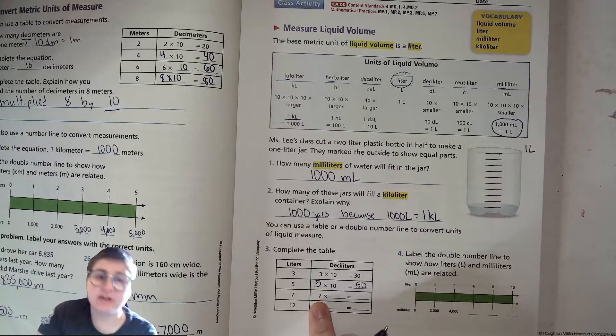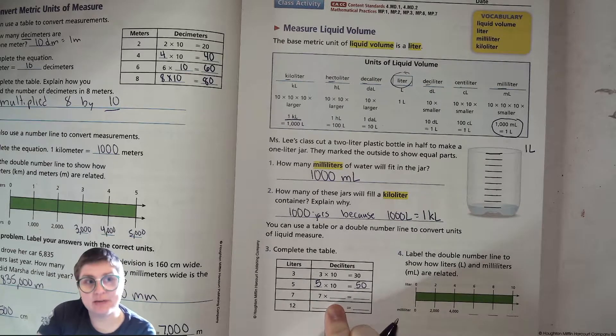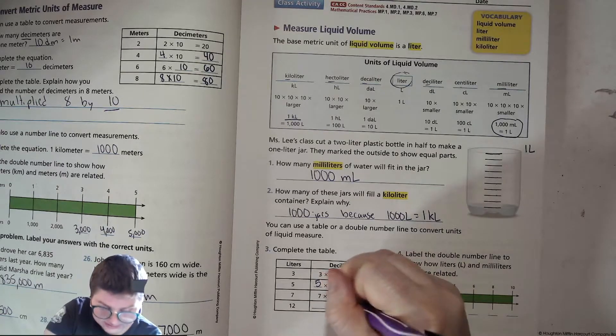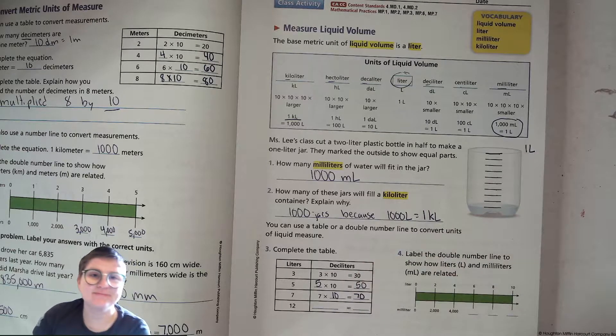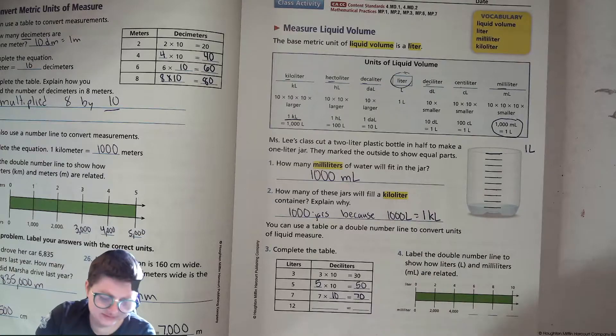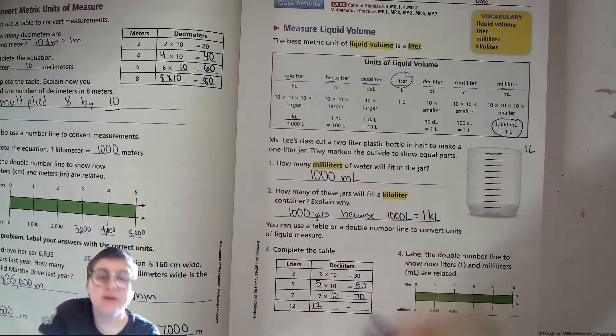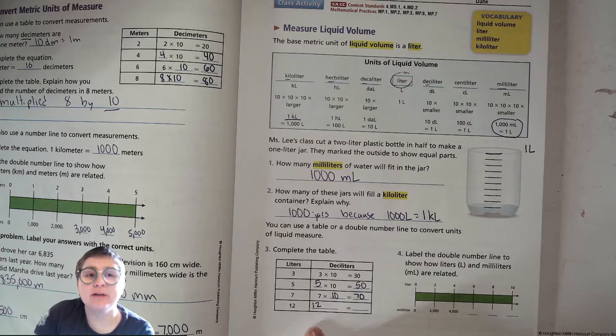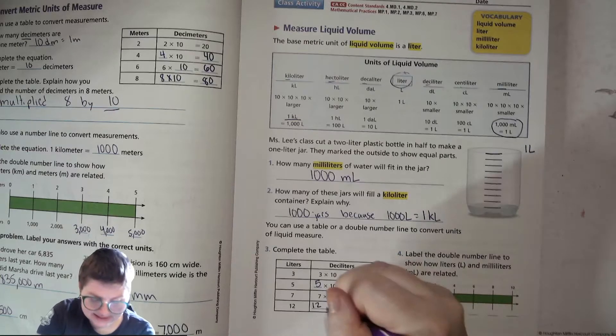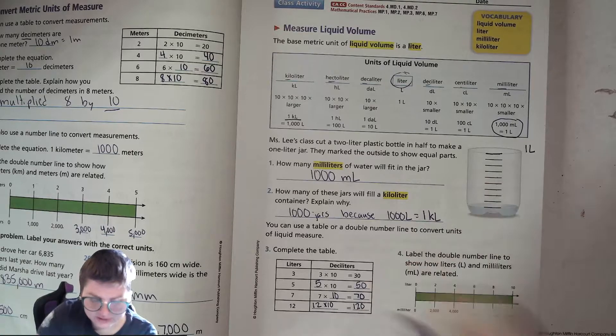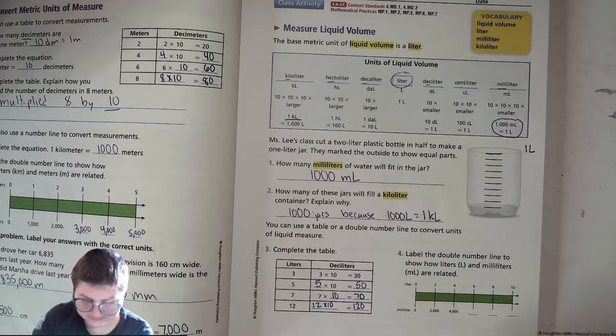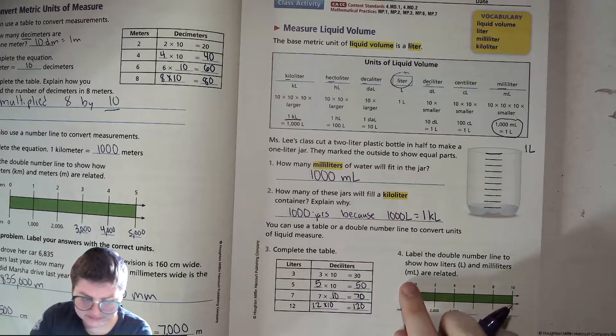Seven. What are you going to multiply the seven by to figure out how many deciliters? By 10, of course. And what is seven times 10? 70. For 12? Well, you start with your 12. What do you multiply 12 liters by to find out how many deciliters? By 10. What do you get? 12 tens or 120.